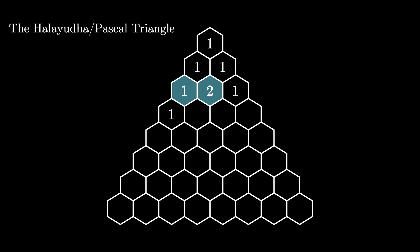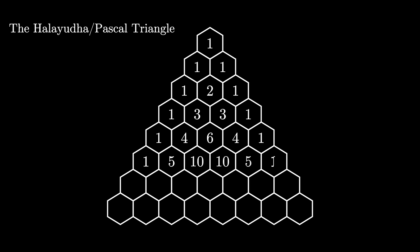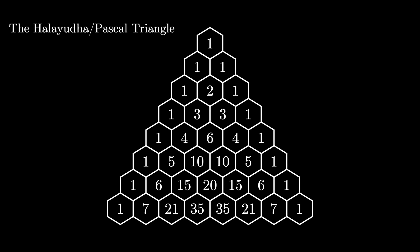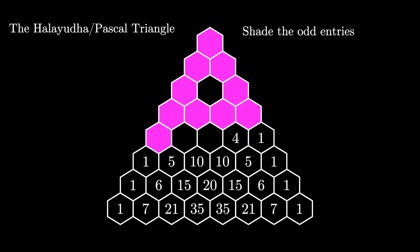So we always begin each row with a 1, then we get 1 plus 2 for this entry, and 2 plus 1 for the next entry, and the final entry in the row is always 1. Let's see this one more time for the 4th row. We can continue filling in each row using this pattern, where each entry is the sum of the two entries above it. With this arithmetic triangle in hand, you can go entry by entry and shade a cell if the entry is odd, and leave the cell unshaded if the entry is even. The pattern you get for the first rows looks like this.